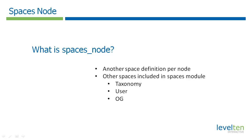So what is Spaces Node? If you look at the Spaces module, it comes with several sub-modules — like Spaces Taxonomy, Spaces User, Spaces OG — and those allow you to define a space per taxonomy, per user, or per organic group. One thing that was missing that we needed was being able to define a space per node. So Spaces Node is simply an extension of the Spaces module that allows you to say when I'm in the context of a node, make that into a space and give us all the power of Spaces even if the node is not an organic group.